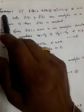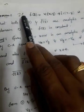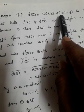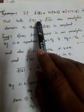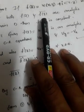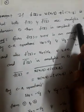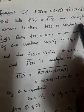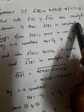Dear students, today we are going to see one more theorem. The theorem says: if f(z) = u(x,y) + iv(x,y) is such that both f(z) and f̄(z) are analytic in a domain D, then f(z) is constant. So we have to prove that f(z) is nothing but constant.